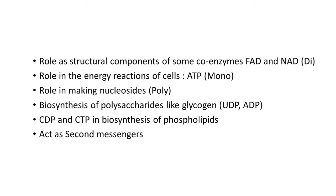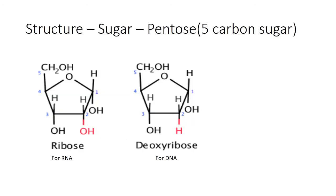CTP nucleosides are used in the biosynthesis of phospholipids, and nucleotides also act as second messengers. There are different types of nucleotides: mono, di, and poly. Examples of mononucleotides include ATP; for dinucleotides, FAD and NAD are the examples; and polynucleotides are used in nucleic acid synthesis.